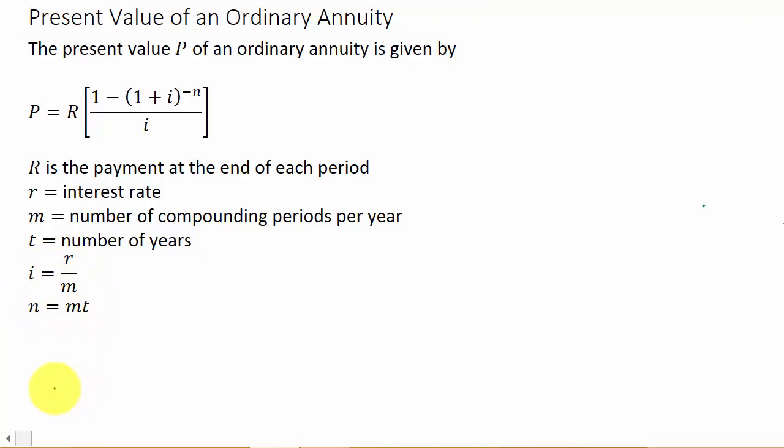So what's the present value of an ordinary annuity? Well, it's the amount that you have to deposit today at the same compounded interest rate as the annuity to provide all the payments for the term of the annuity.